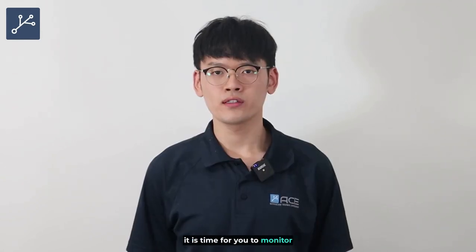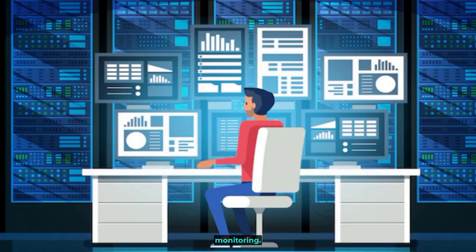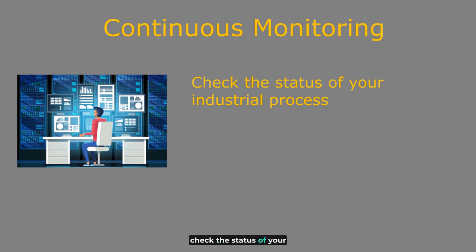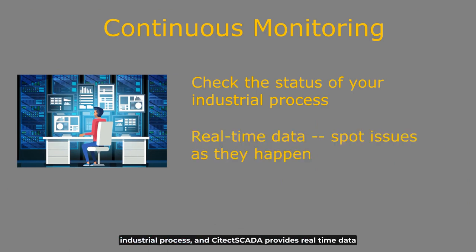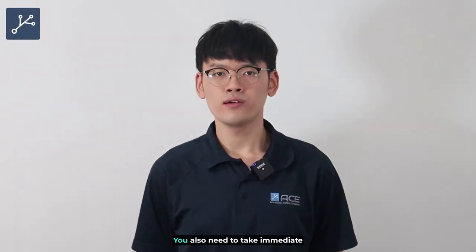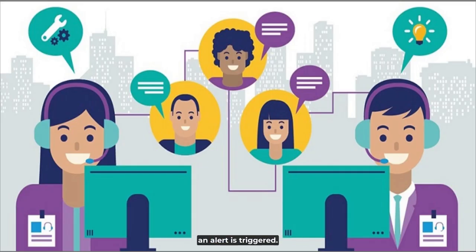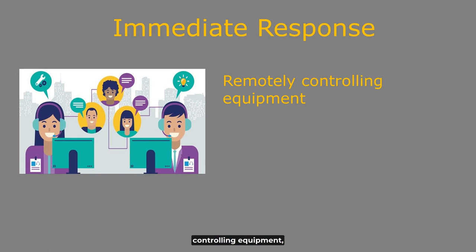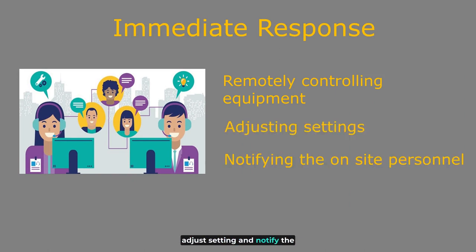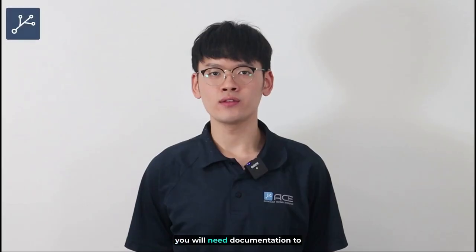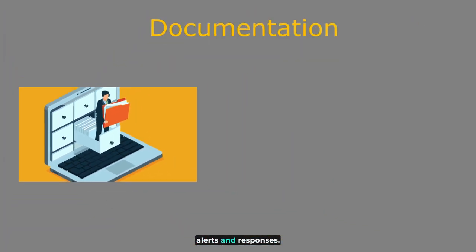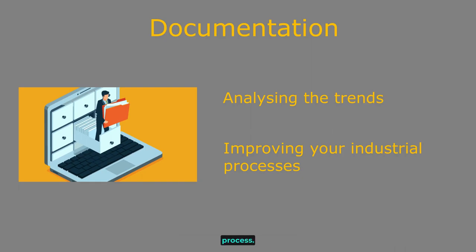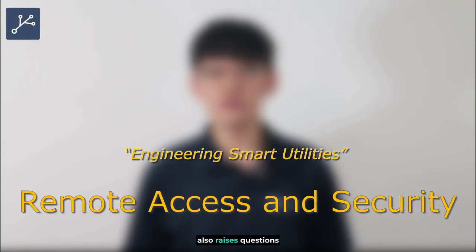Once your remote alerting system is up and running, it's time to monitor and respond to alerts. You'll need to do continuous monitoring by regularly checking the status of your industrial process — Citect SCADA provides real-time data that allows you to spot issues as they happen. You will also need to take immediate response by acting promptly when an alert is triggered, which might involve remotely controlling equipment, adjusting settings, and notifying on-site personnel. Finally, keep records of all alerts and responses, as this documentation is invaluable for analyzing trends and improving your industrial process.